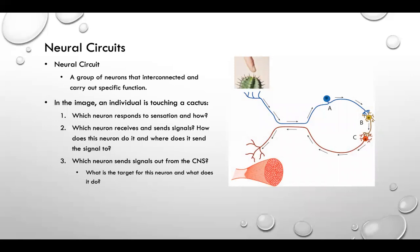Now that we discussed how all these components come together, let's review a scenario of neural circuits. Neural circuits are a group of neurons that interconnect and carry out specific functions.